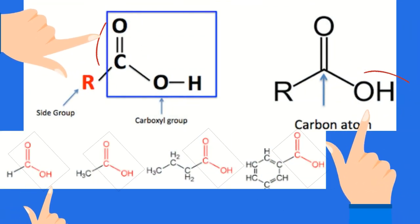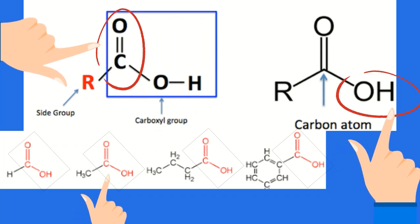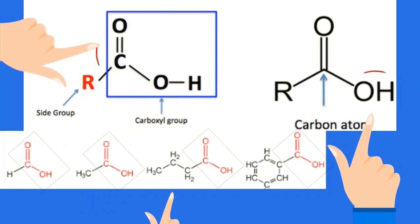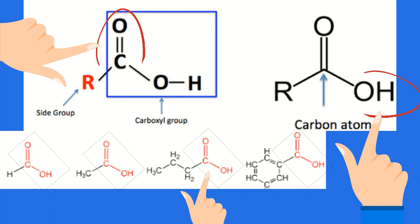Carboxylic acid is an organic compound that contains a carbonyl group (C double bond with O) and a hydroxyl group (OH) attached to a carbon atom. The carboxyl group (COOH) at the end of the carbon chain is what defines a carboxylic acid.